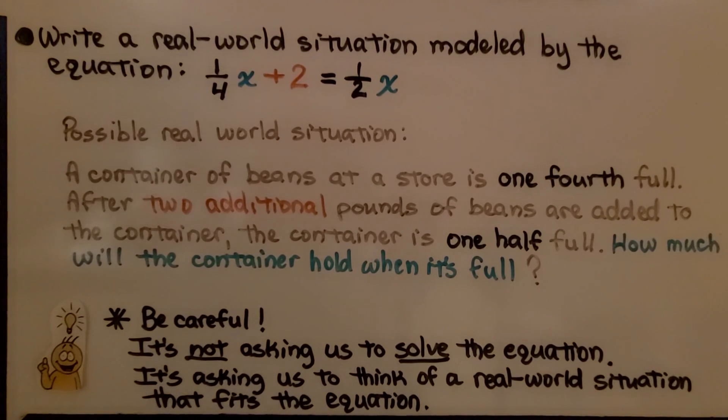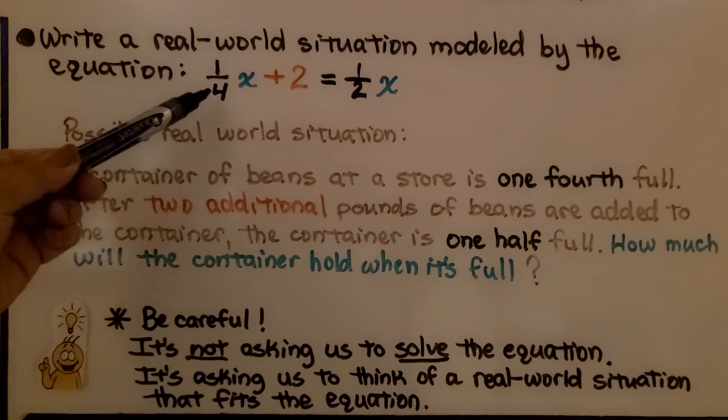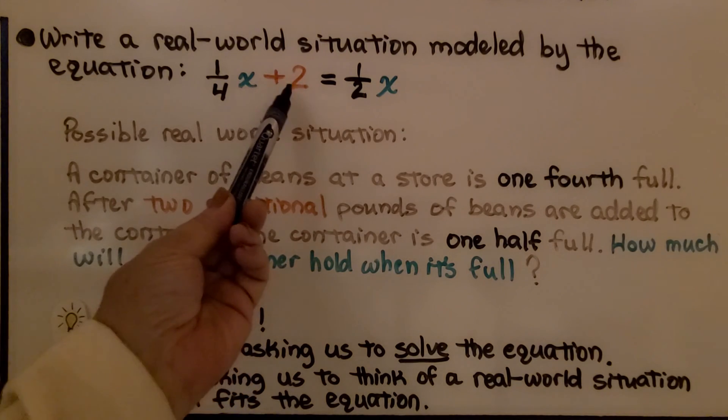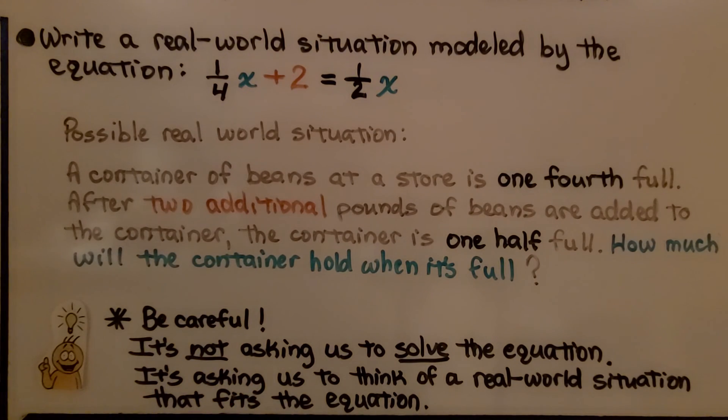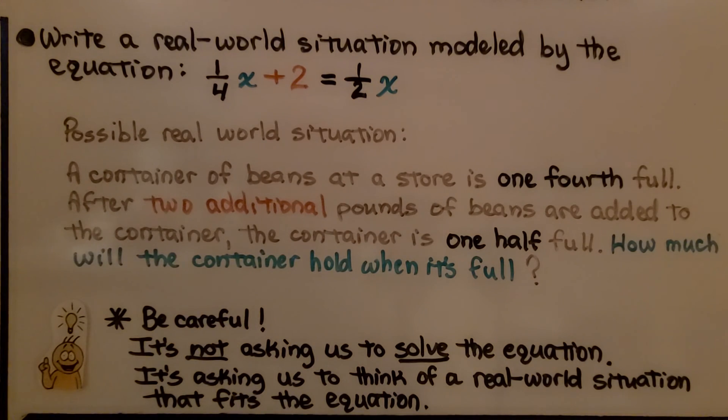Here it's telling us to write a real-world situation modeled by the equation one-fourth x plus 2 equals one-half x. A possible real-world situation is a container of beans at a store is one-fourth full. After two additional pounds of beans are added to the container, the container is one-half full. How much will the container hold when it's full? Now, be careful. It's not asking us to solve the equation. It's asking us to think of a real-world situation that fits the equation.